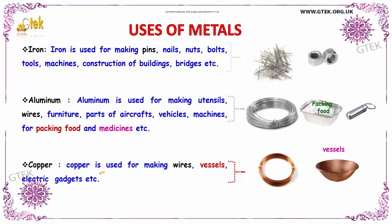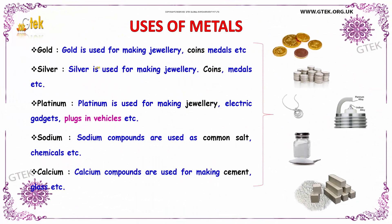Copper is used for making wires, vessels, and electric gadgets. Gold is used for making jewelry, coins, and medals. Silver is used for making jewelry and coins. Platinum is used for making jewelry, electric gadgets, and plugs in vehicles. Sodium compounds are used as common salt and chemicals. Calcium compounds are used for making cement and glass.